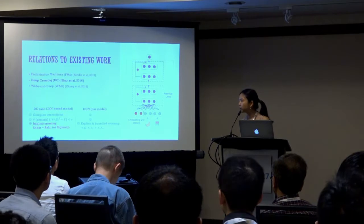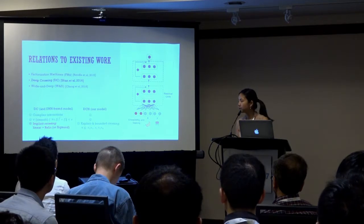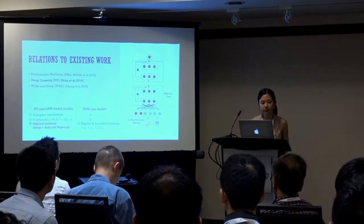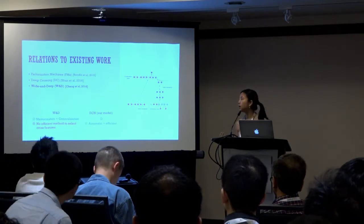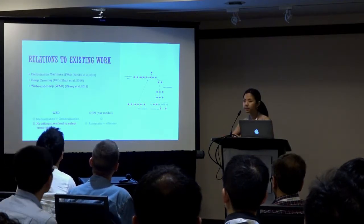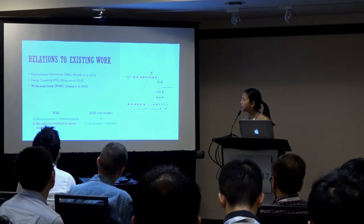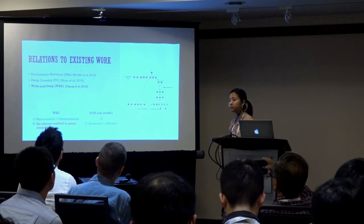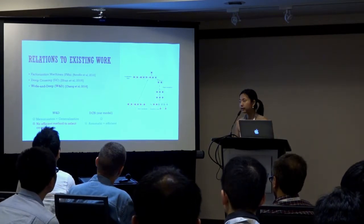If you're a fan of Kaggle competitions, you might have realized that many manually crafted features in winning solutions are not very complex. Instead, they're of low-order, explicit, and effective. From this aspect, our model's crossings are explicit, of bounded degree, and in the format of monomials — for example, x1 times x2. The wide and deep model was also proposed in the spirit of learning bounded degree feature interactions more efficiently. However, there is no efficient method to select those predictive cross-features for the linear component, while our model is able to automatically learn those bounded degree explicit features.